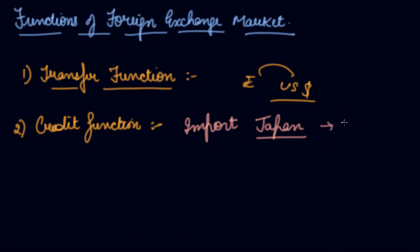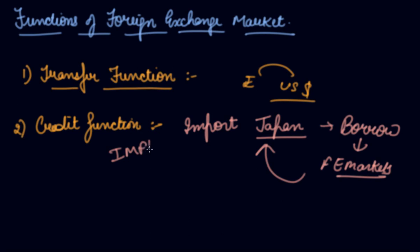What you will do is borrow the currency from the foreign exchange markets and buy the particular machine to do the imports. Borrowing is handled by the IMFs or the foreign exchange markets. You can take the credit. This is the credit function.